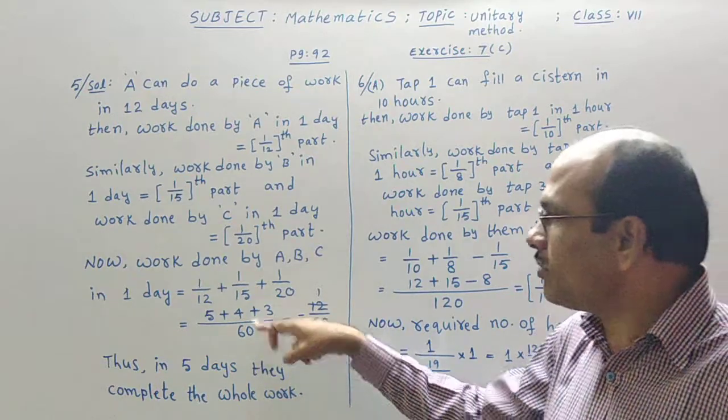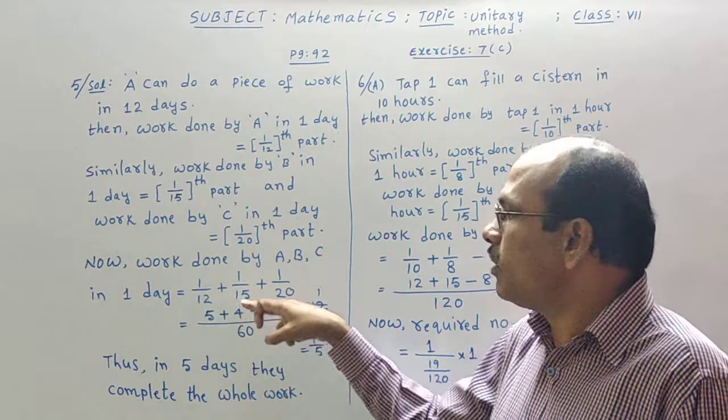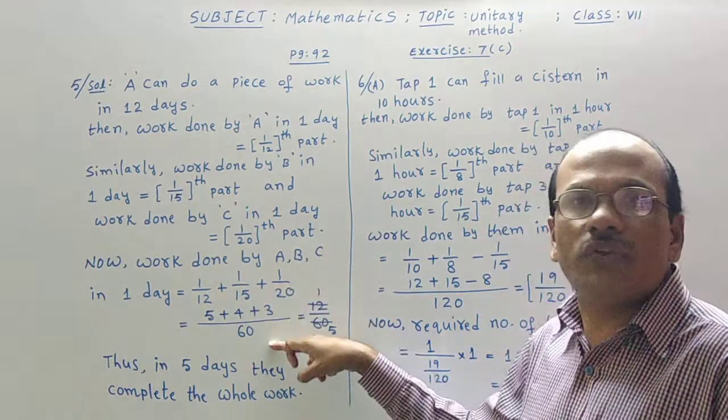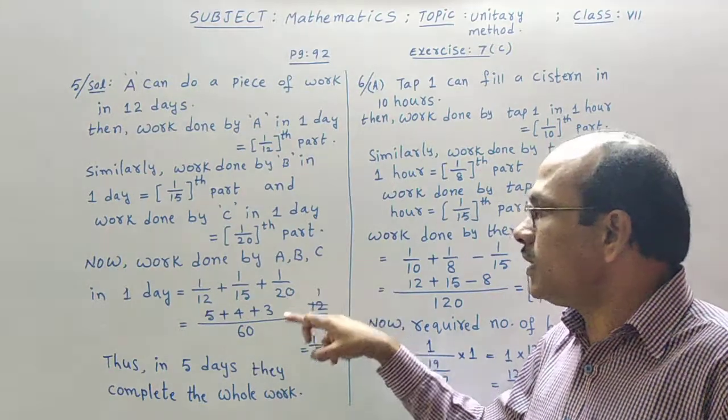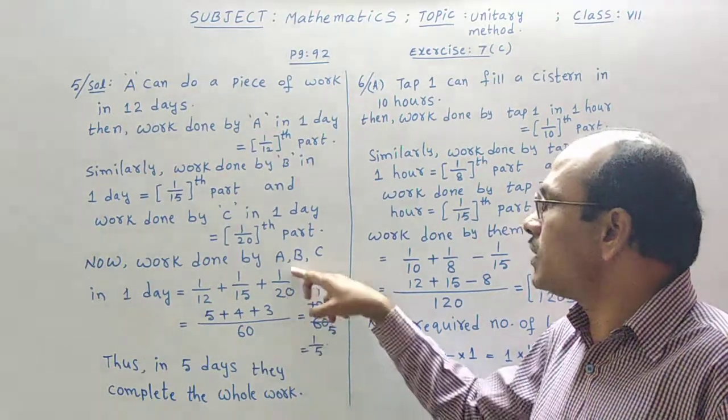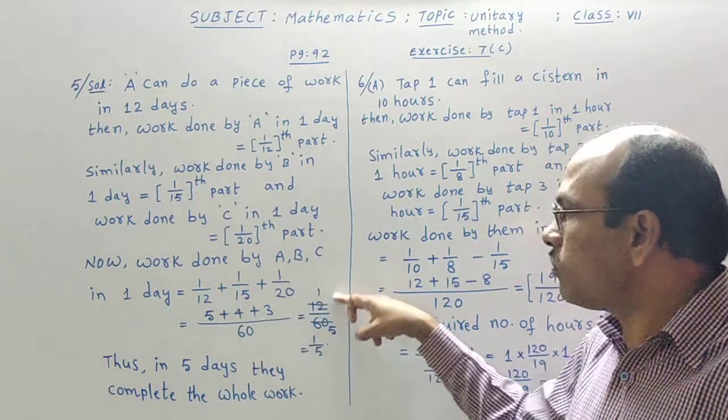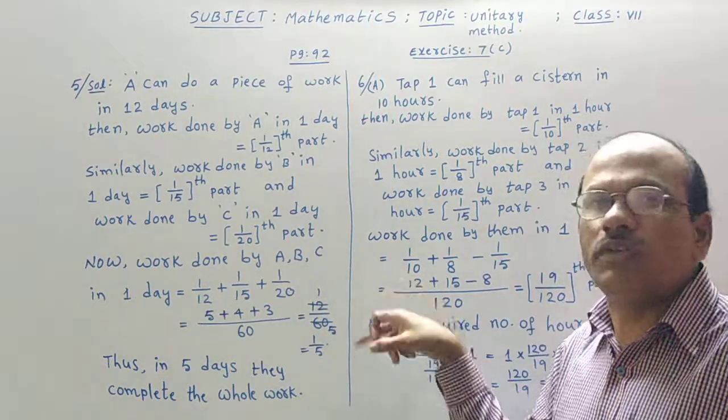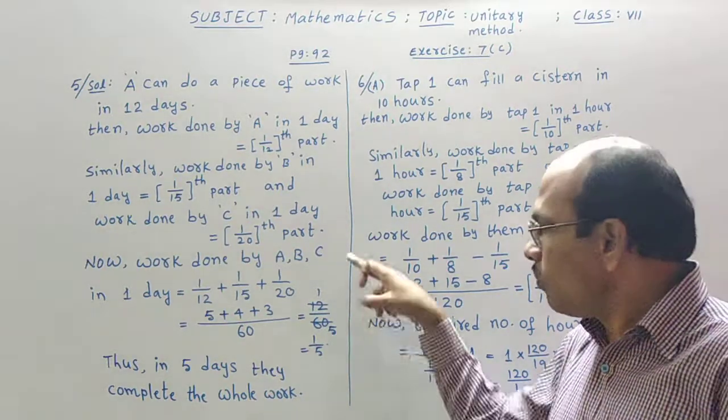LCM is 60. We know how to do LCM. 12 fives are 60. 5 ones are 5. Plus symbol. 15 fours are 60. 4 ones are 4. Plus 20 threes are 60. 3 ones are 3. By adding all of them, we got 12. 12 by 60. Cancelation with the 12th table. 12 ones. 12 fives. 1 by 5.